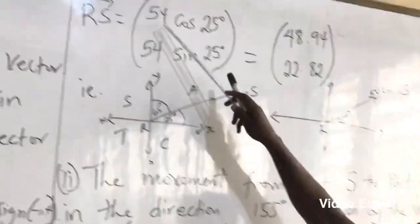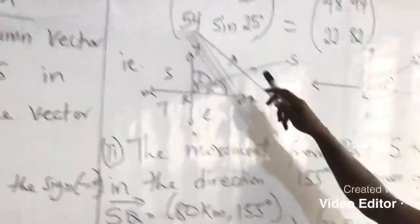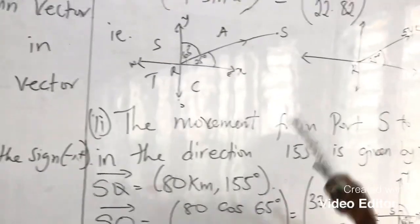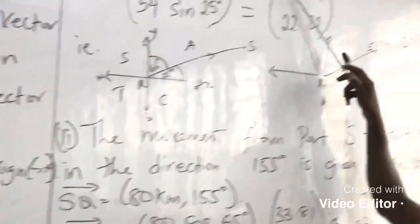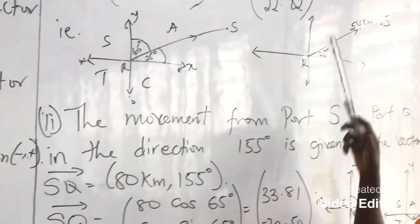So we are going to get 54 cos 25 degrees and 54 sin 25 degrees. And this is going to give us 48.94 and 22.82.